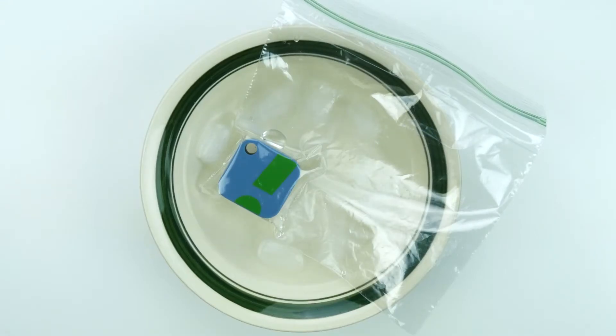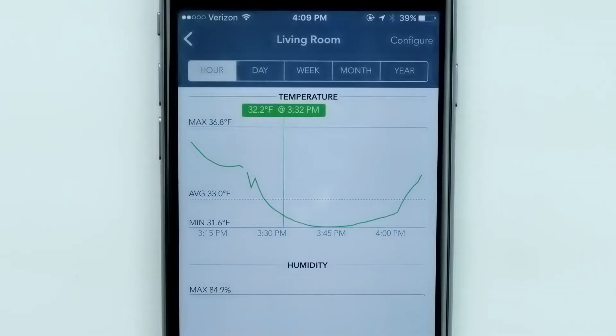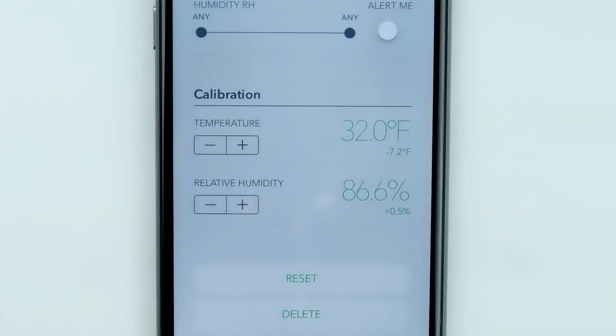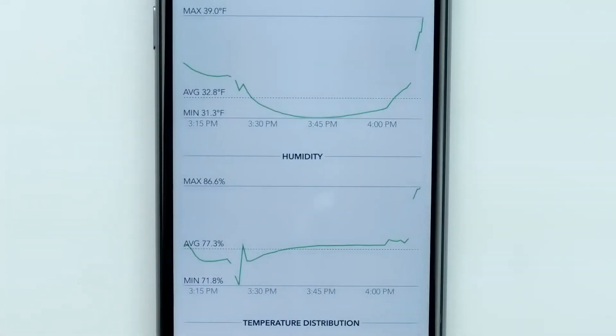Give the sensor 30 minutes or so to fully acclimate. Then adjust the settings in the app to read exactly 32.0 degrees Fahrenheit or 0.0 degrees Celsius.